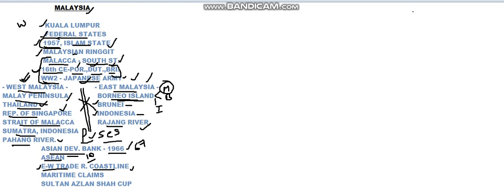Malaysia claims the South China Sea. This is a maritime claim — the South China Sea is claimed by four countries: China, Philippines, Malaysia, and Vietnam. Malaysia is also famous for the Men's International Hockey Championship called the Sultan Azlan Shah Cup, which is a very famous international men's hockey tournament. Sultan Azlan Shah was one of the sultans in the earlier days of Malaysia.